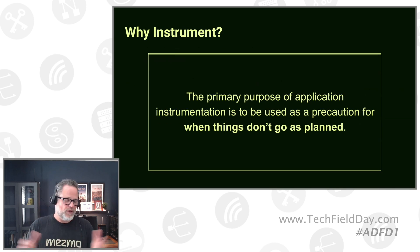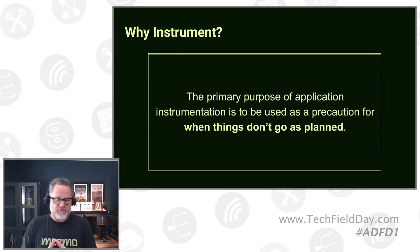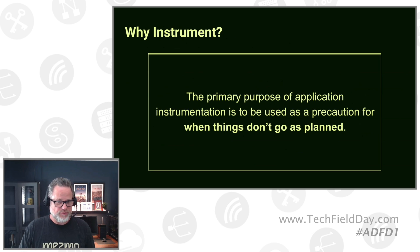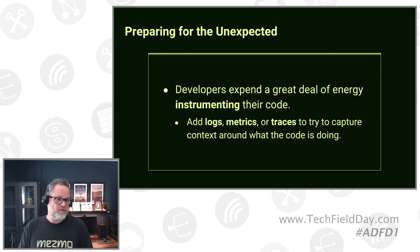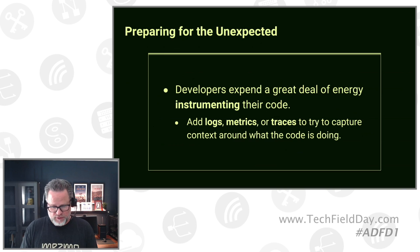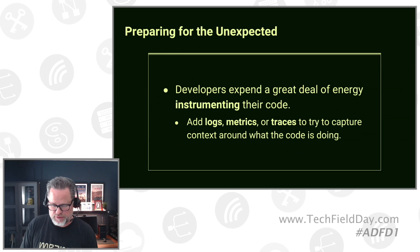The question becomes: why do we instrument? It's an insurance policy, really. The whole reason for implementing application instrumentation in the first place is just as a precaution for when things don't go as planned. When there are outages, we need to understand quickly what's going on, and that's what this instrumentation is — what we depend on. It's really about preparing for the unexpected. Developers expend a great deal of energy instrumenting their code. Adding metrics, logs, and traces is not free. It takes effort, time, and planning to do it right.